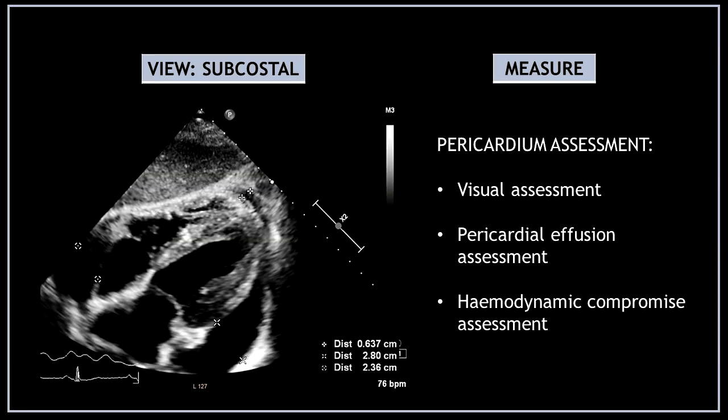Now continue with the pericardial assessment and perform a visual assessment of the pericardium. If you find a pericardial effusion, measure the diameter and check for any hemodynamic compromise.